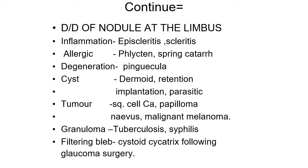The differential diagnosis of nodule at the limbus — this is a short note topic. It can be due to inflammation (episcleritis and scleritis), allergy (phlycten or vernal catarrh), degeneration (pinguecula), cysts (dermoid cyst, retention or implantation cyst, or parasitic cyst), or tumors (squamous cell carcinoma, papilloma, nevus, malignant melanoma, granuloma due to tuberculosis or syphilis). A filtering bleb is generally at the 12 o'clock position but can also be a differential diagnosis.